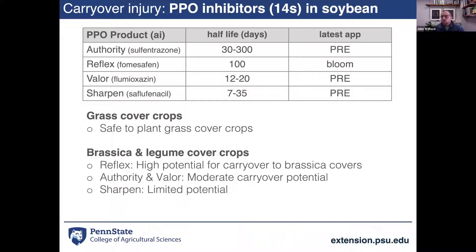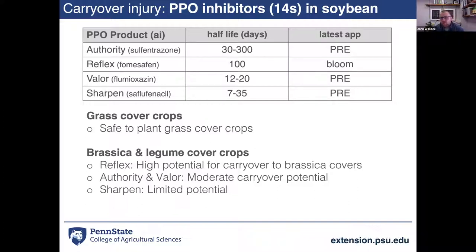The last mode of action used for residual purposes in soybeans would be PPOs, a very important site of action in soybean programs. The most common PPO inhibitors would be Authority programs (active ingredient sulfentrazone) and Valor, also a common pre-residual in soybeans. Reflex is really a good post PPO product with a pretty long half-life and soil residual activity — this is the one that often surprises producers because they're using it post-emergence for foliar activity but don't realize its residual activity length, and it can definitely cause carryover injury. Sharpen is really just a burndown, short-lived, with no worries for post-harvest seedings.